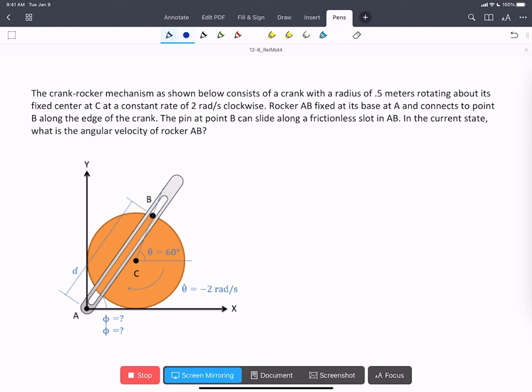In this problem, we have a crank rocker mechanism. The crank is the orange circle. It's fixed and pinned at C, and it rotates in a full circle. And the rocker is the slotted arm, AB, that follows the pin as the crank goes around.